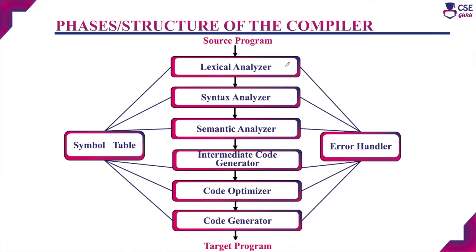Looking at the phases or structure of the compiler: initially the source program is given as input. The lexical analyzer accepts the source code, scans the complete source code, and produces meaningful tokens. In each phase, the compiler transforms the source program from one representation to another representation, so the lexical analyzer creates a representation called tokens.